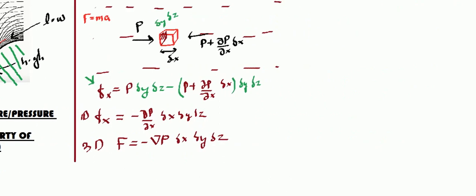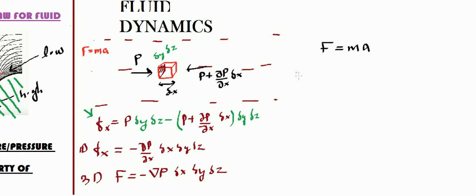This is part one of the derivation. Now let's apply Newton's equation to this cube of liquid. Force equals mass times acceleration. The net force experienced is minus gradient of P. So: minus gradient of P multiplied by delta x delta y delta z equals mass times acceleration.